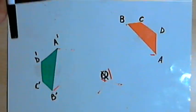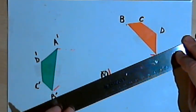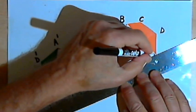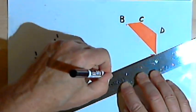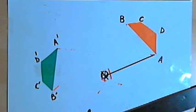To find the angle of rotation, I'm going to draw a line from the center of rotation to one of the points on my original image. So I'm going to connect the center of rotation with point A.